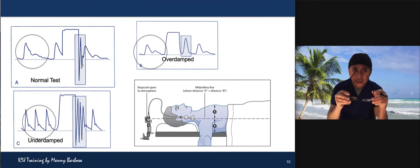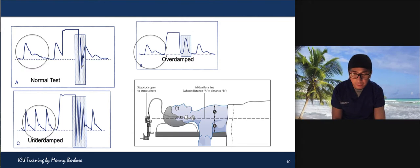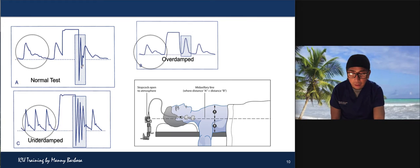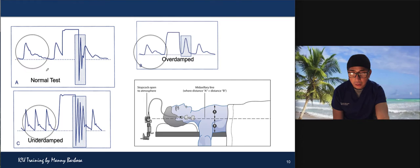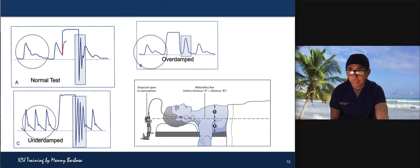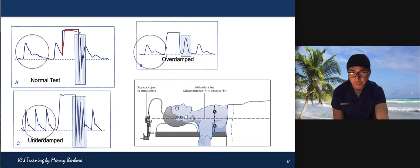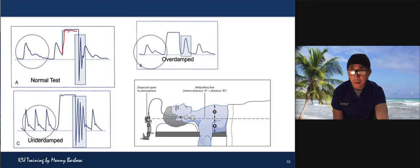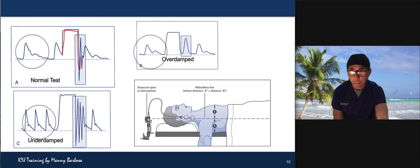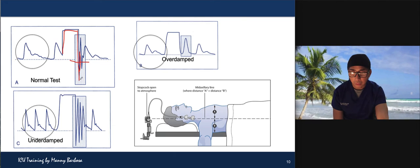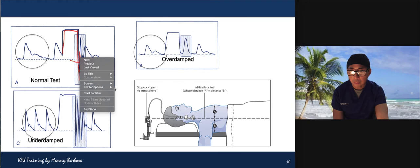This is the normal test — an optimally damped system is what we call 'normal.' When the fast flush of the continuous flush system is activated, you press it and see the line going up. It will create a sharp upstroke and terminate in a flat line at the maximal indicator on the monitor, followed by an immediate and rapid downstroke extending below the baseline with just one or two oscillations.